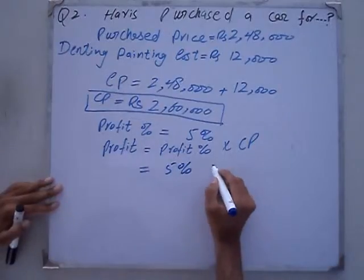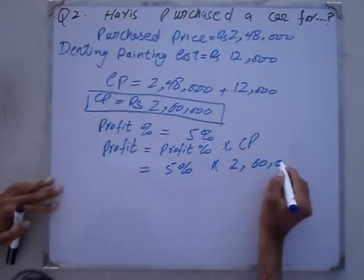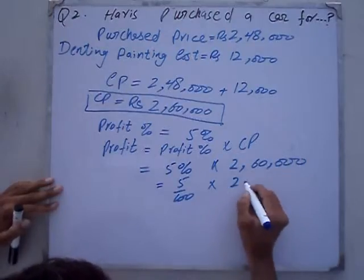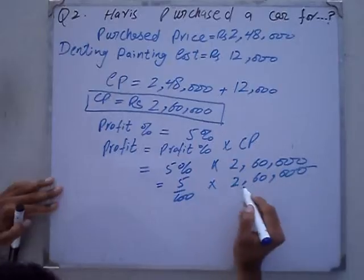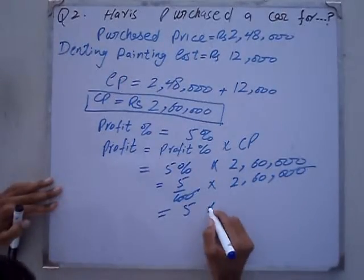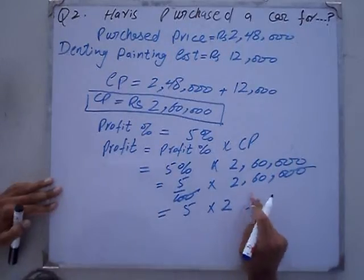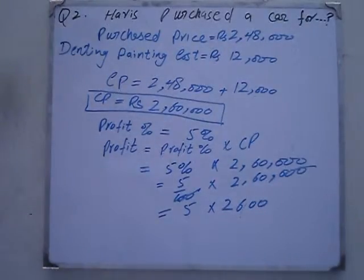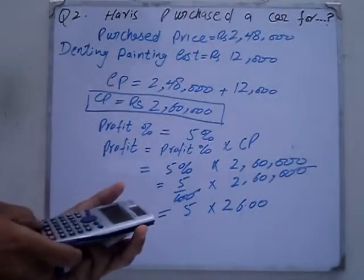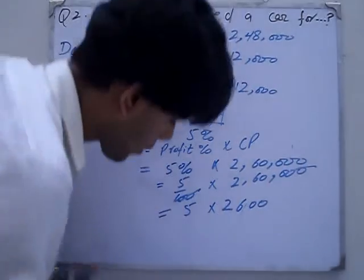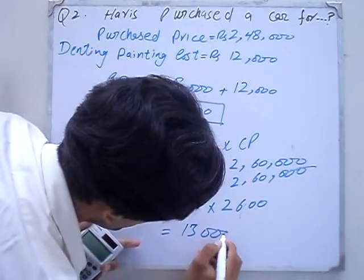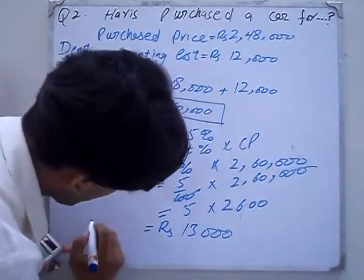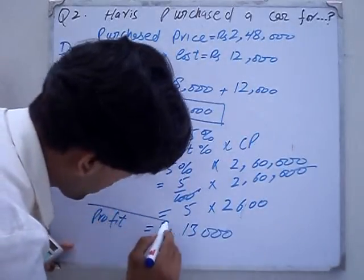5% equals 5 over 100. When we remove the percent, it becomes 5 over 100. 2,60,000 divided by 100 is 2,600. So 2,600 times 5 equals 13,000. The profit is RS 13,000.